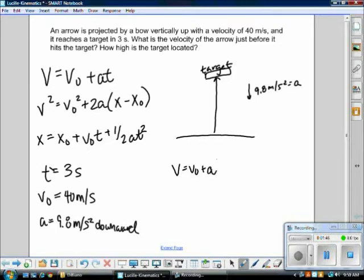Now, you know v-naught, which is 40 meters per second, as you see on your left. And acceleration is negative 9.8 meters per second squared because, as I said before, acceleration is downward while velocity is upward. And the time is 3 seconds on the left again.